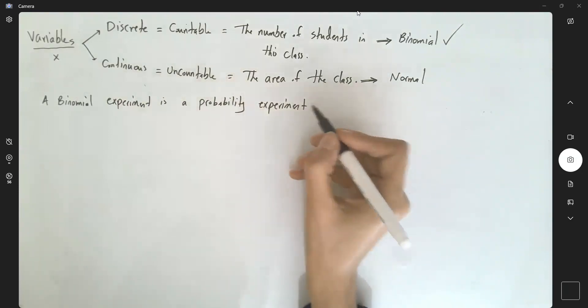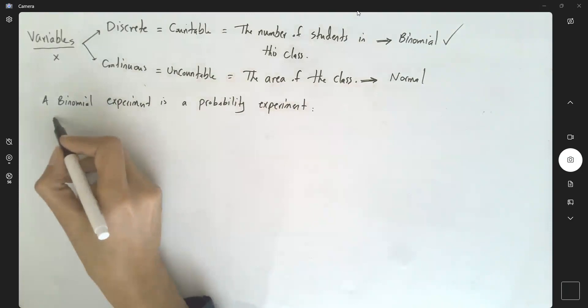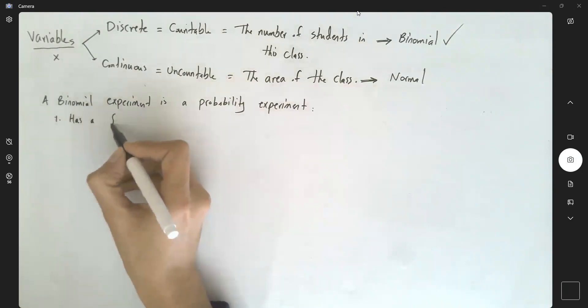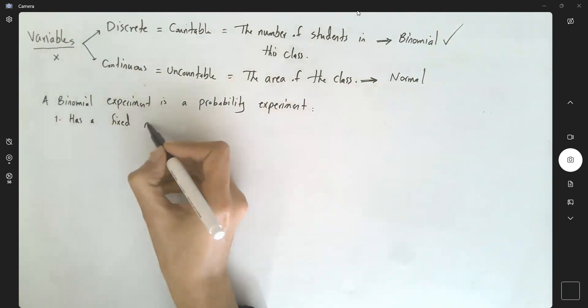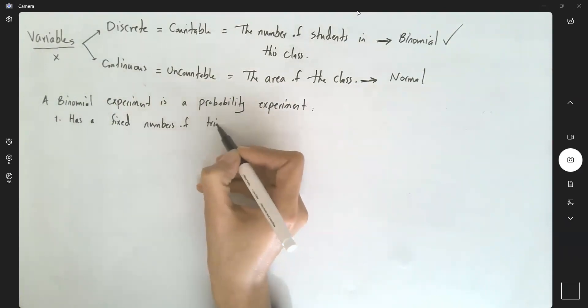experiment that satisfies the following conditions. The very first condition is the experiment has a fixed number of trials. Number of trials, we should denote by n.